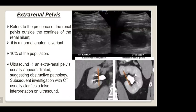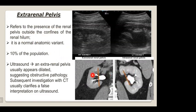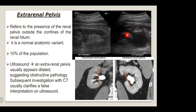This is an example of the normal variant called extra-renal pelvis, which refers to the presence of the renal pelvis outside the confines of the renal hilum. On the right side, the pelvis is within the confines of the renal hilum, while on the other side it is outside. It is a normal anatomical variant present in 10 percent of the population. On ultrasound, it may appear dilated and suggest obstructive pathology, but subsequent CT investigation usually clarifies the false interpretation.